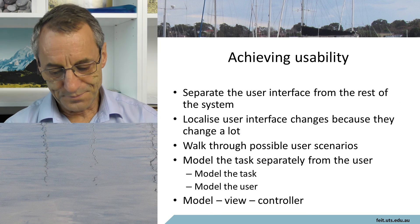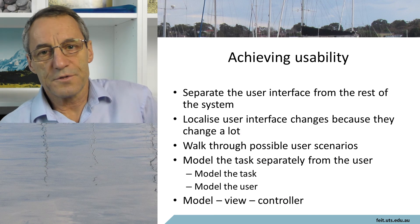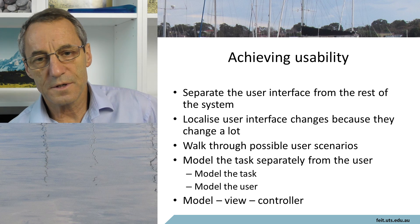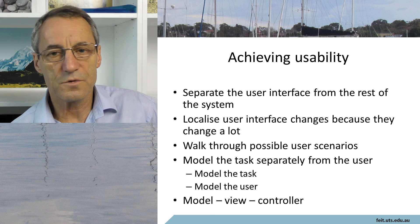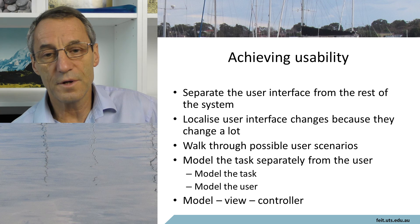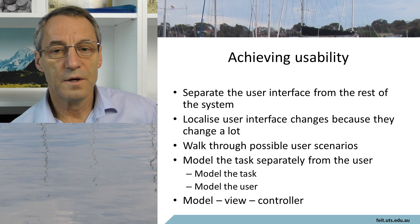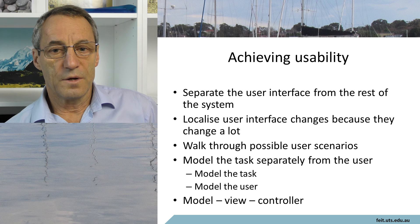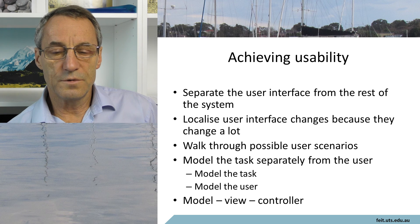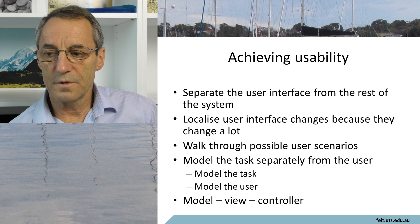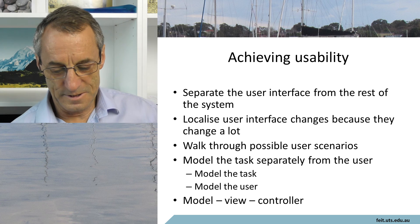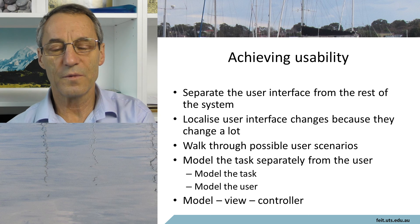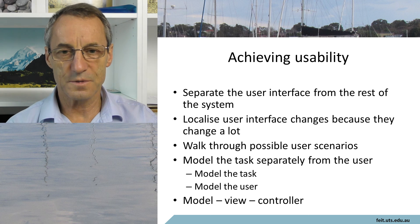Achieving usability: we separate the user interface from the rest of the system. This allows the user interface to differ depending on what the client is. It could be a mobile device — increasingly now it could be a desktop PC, a mobile phone, a notebook or notepad, and probably a few more coming up as well. So we probably want the user interface to be as independent from the rest of the system as possible.